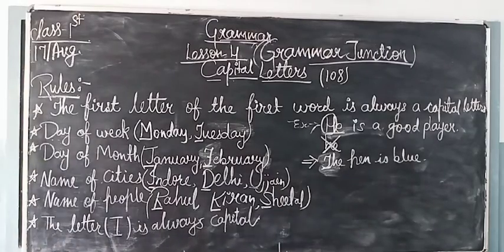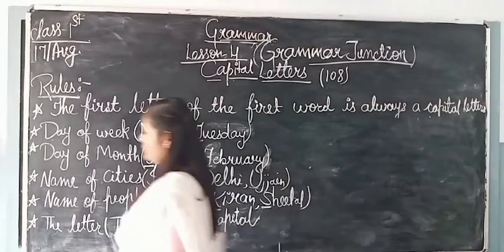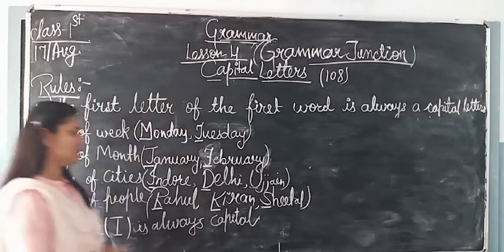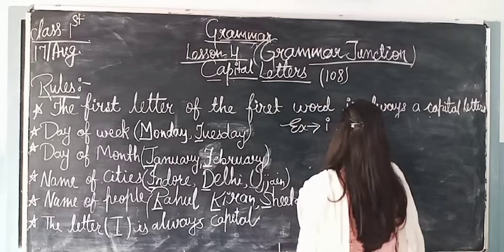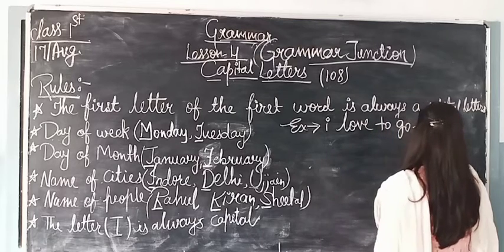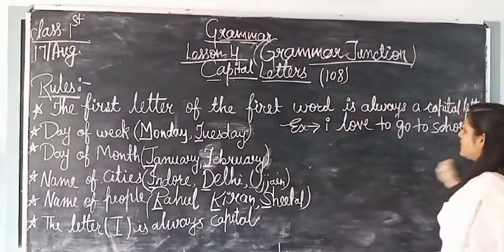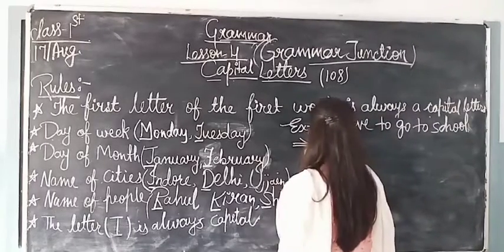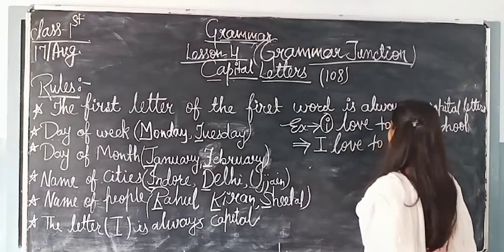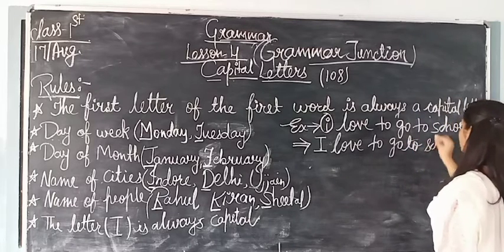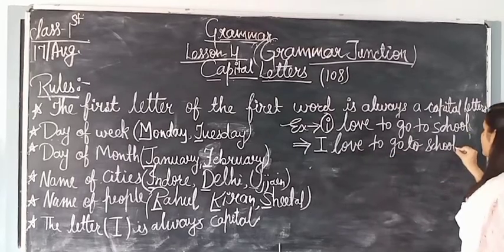Now let's look at some examples. Suppose I have the sentence: 'I love to go to school.' Is this sentence right or wrong? Wrong. Why? Because the first letter is small. When starting a sentence, the first letter must always be capital. The correct sentence is: 'I love to go to school.' And at the end of the sentence, you must put a full stop.